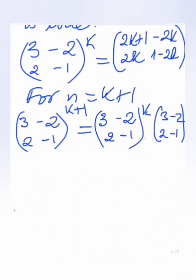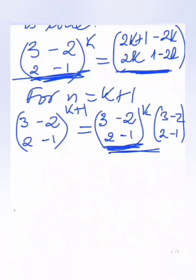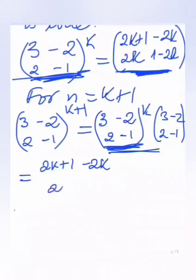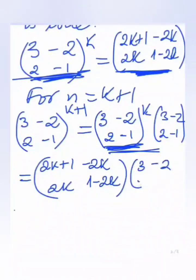We replace [3, -2; 2, -1] to the power k with its assumed form from the hypothesis step. So the expression becomes [2k+1, -2k; 2k, 1-2k] times [3, -2; 2, -1]. We then find the product of these two 2×2 matrices. The first entry is 3 into (2k+1) plus 2 into (negative 2k). The second entry uses the first row times the second column.